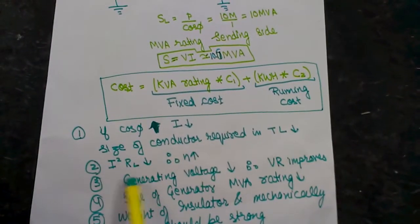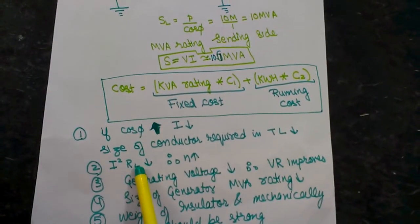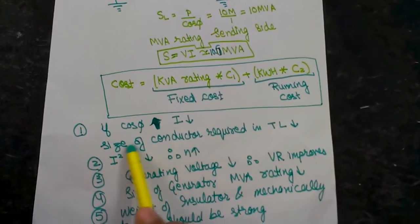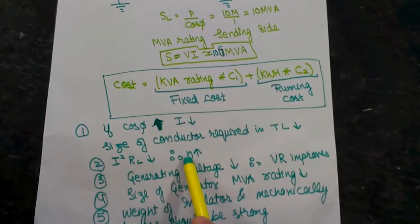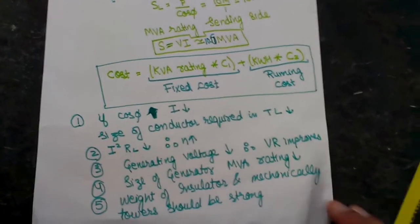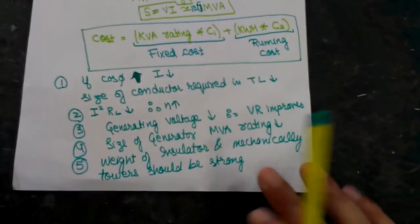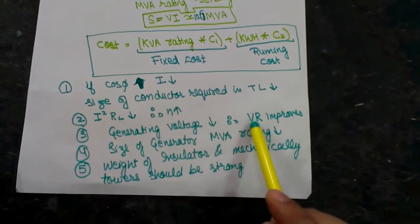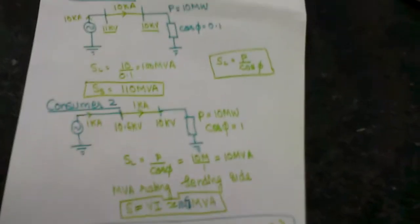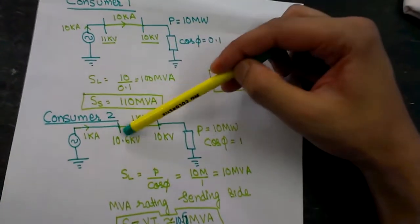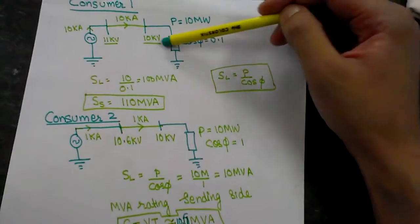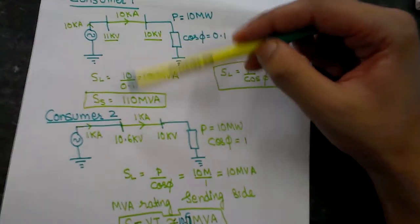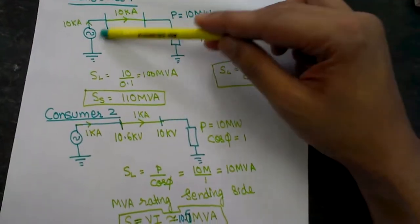As current increases, the I²R losses also increase. Conversely, if the power factor improves, I²R losses decrease and efficiency improves. Also, the generating voltage decreases, which means the voltage regulation improves. In the poor power factor case the utility had to generate 11 kV, whereas in the good power factor case they only had to generate 10.6 kV to deliver 10 kV to the customer. So voltage regulation improves and they have to generate less voltage.